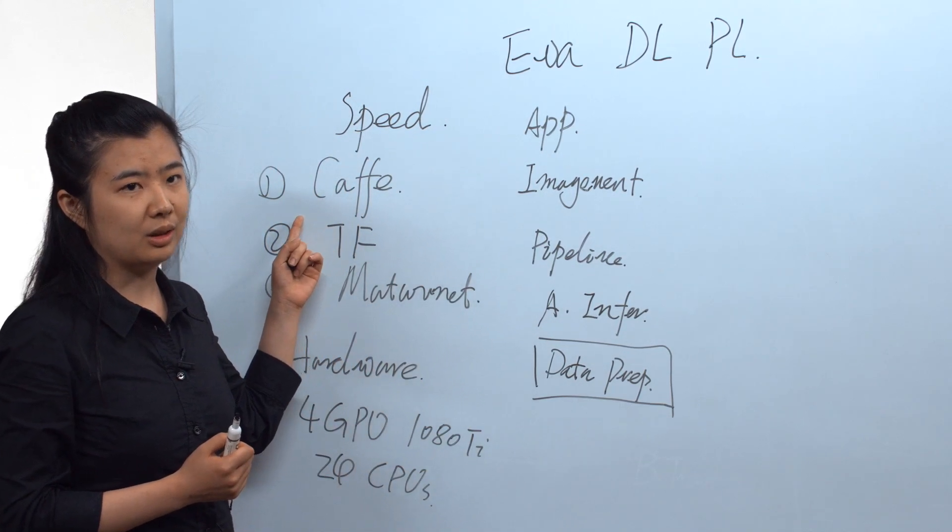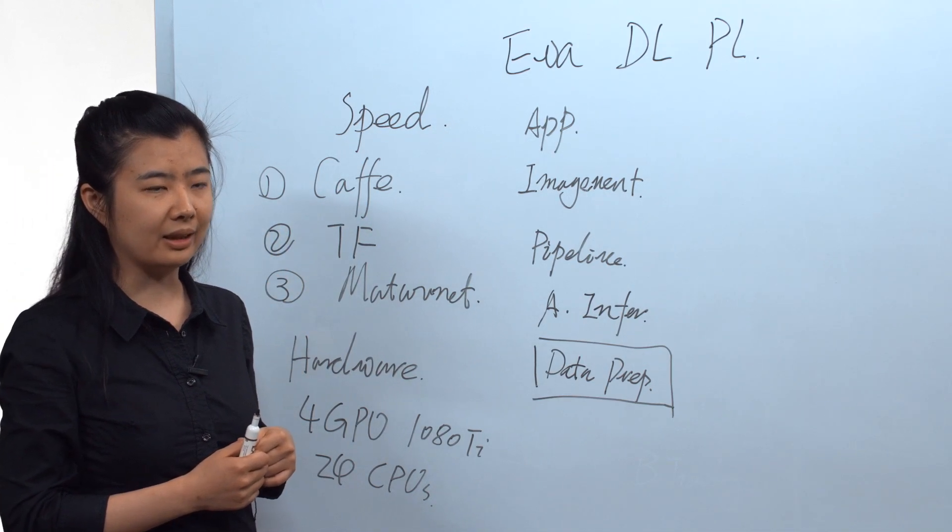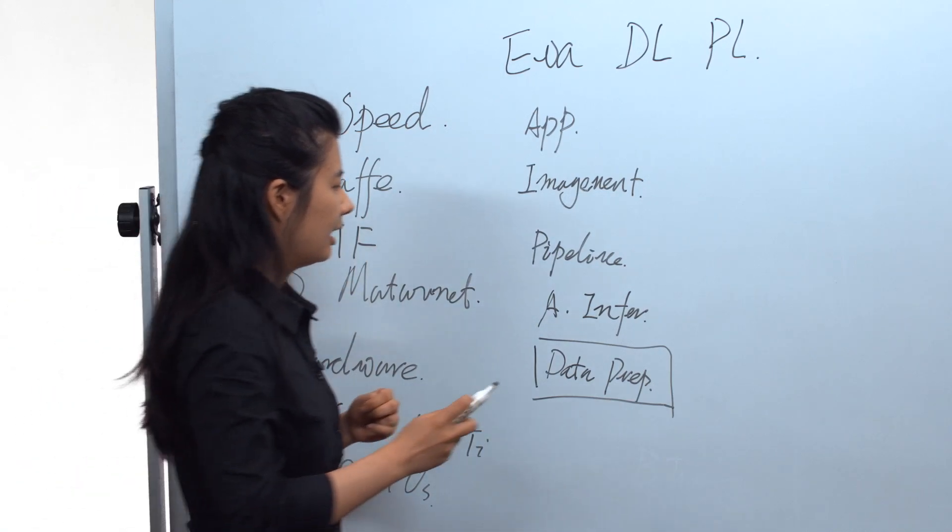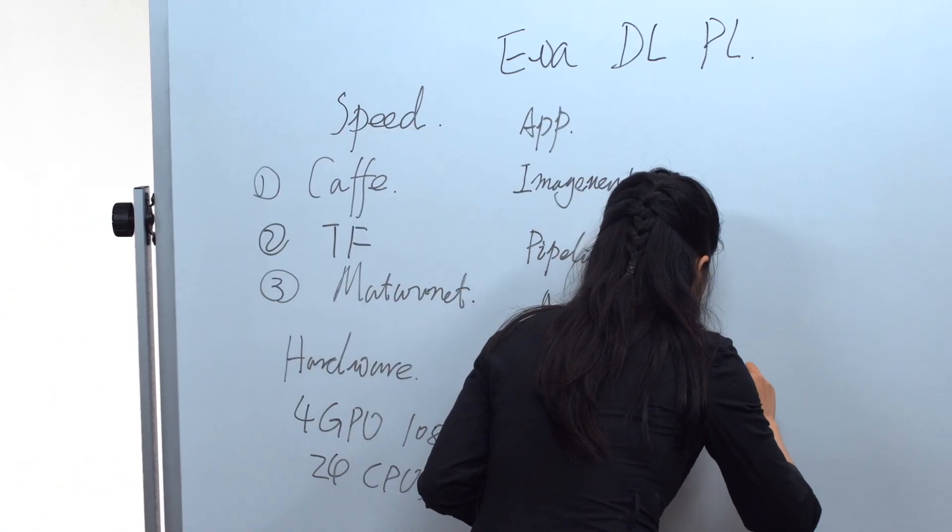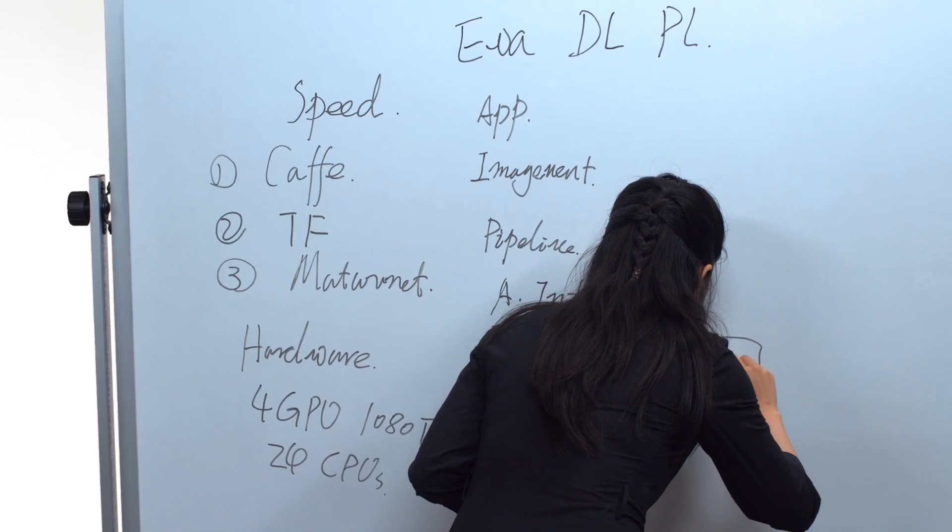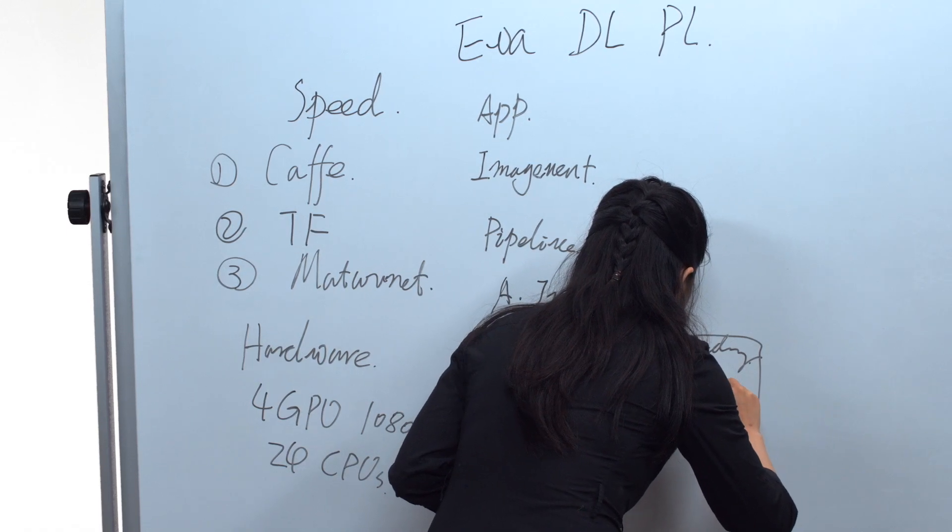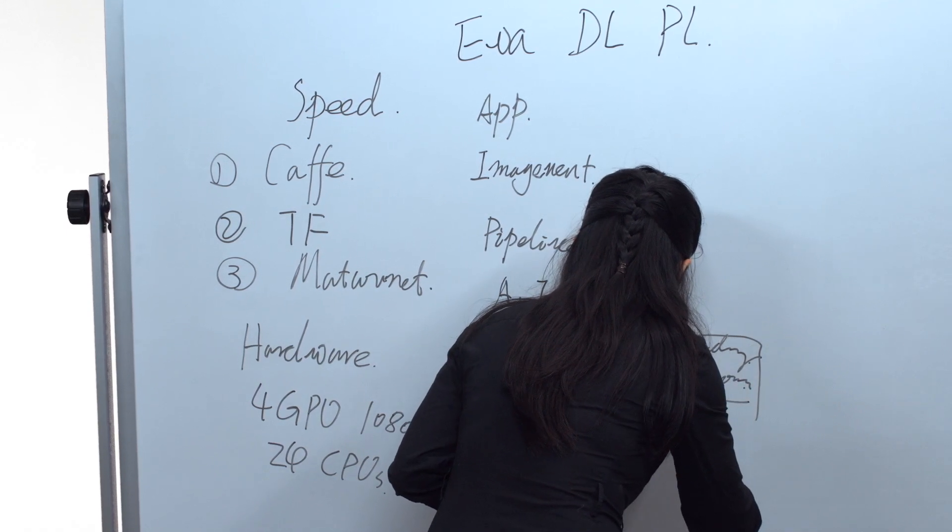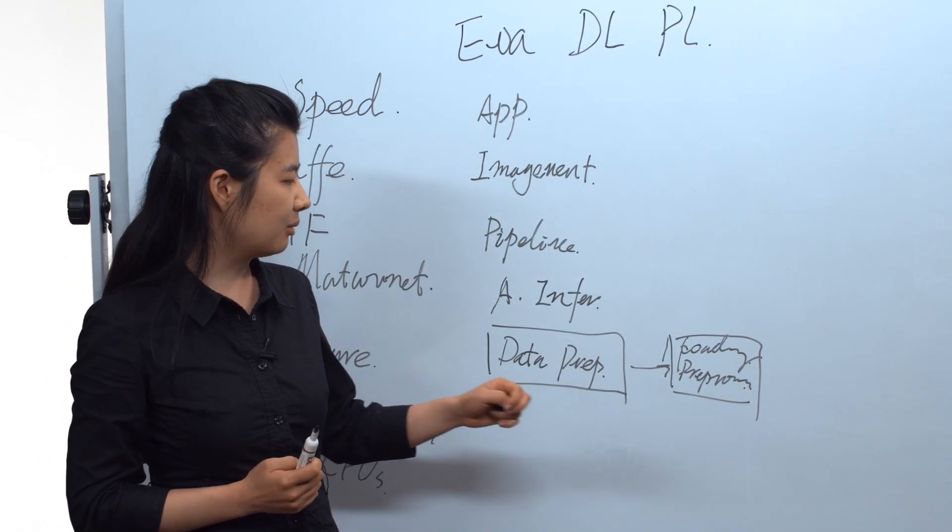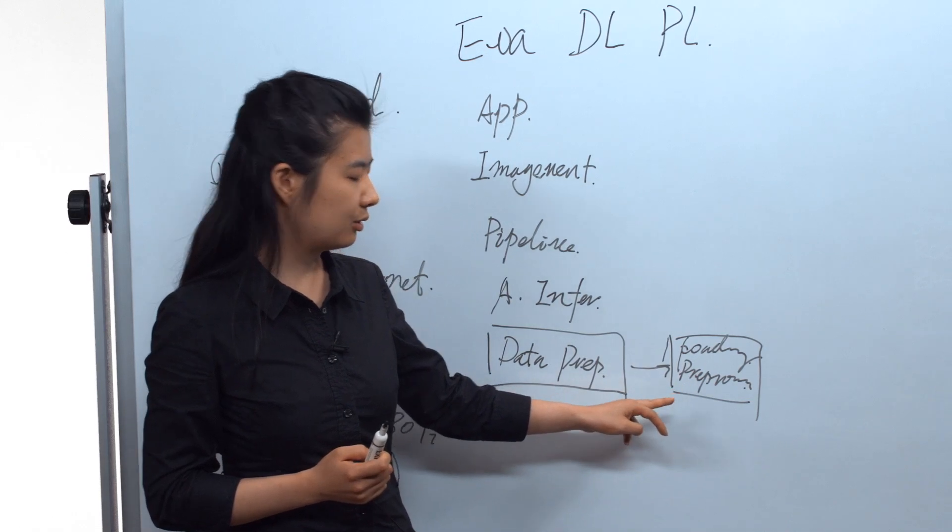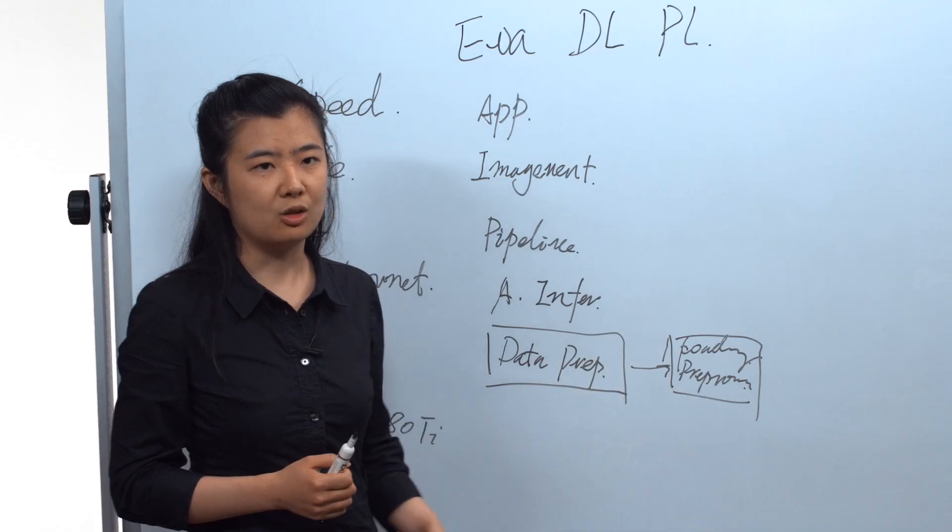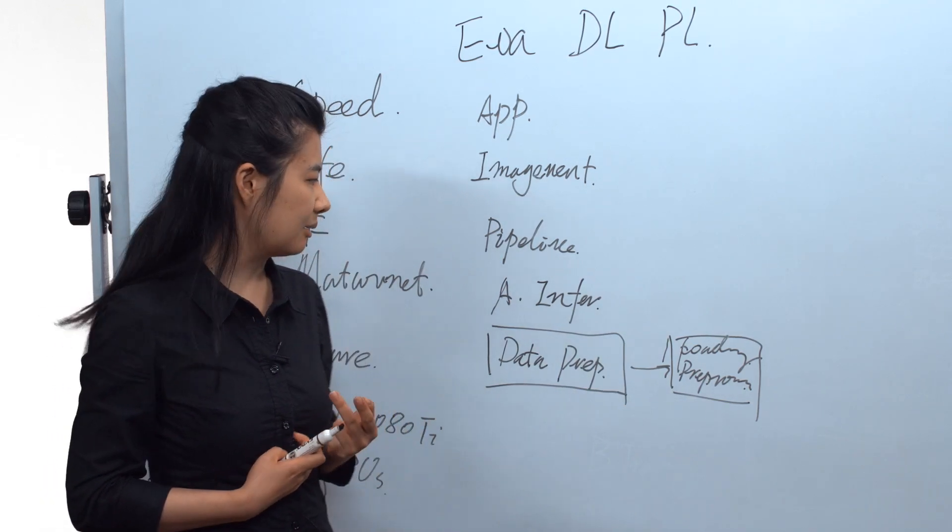Like in Caffe, it will employ LevelDB and LMDB. While in TensorFlow, it would be TF records. After the transformation, we have data loading and data preprocessing. For loading, it is loading data from the hard disk to memory. And in the preprocessing, we prepare the data for the network. For images, it could be resizing and cropping, stuff like that.